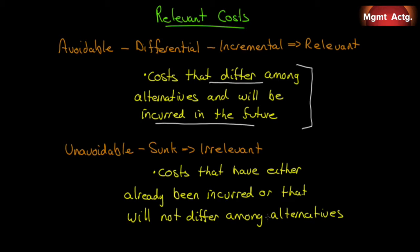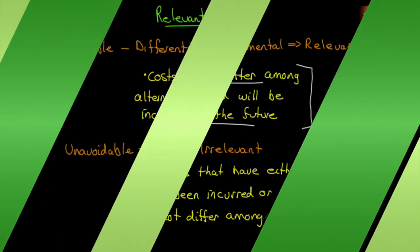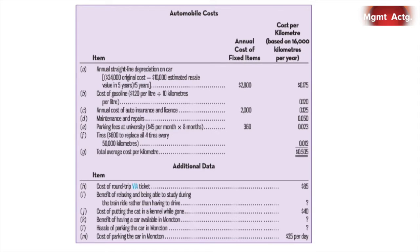Let's look at a few examples to see how absolutely straightforward this really is. The textbook gives a quick example of somebody who wants to drive to Moncton or take the train, trying to decide between the two alternatives, and has diligently sat down and written out all the possible costs. Here are the costs: depreciation on the vehicle per kilometer, cost of gasoline per kilometer, annual cost of auto insurance and license per kilometer, maintenance and repairs, parking fees at the university, and tires — giving an all-in cost per kilometer based on driving 16,000 kilometers a year.